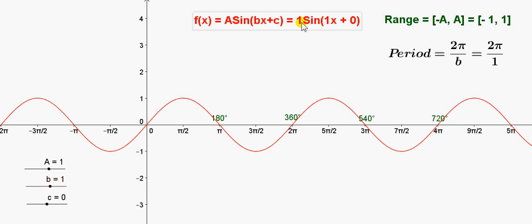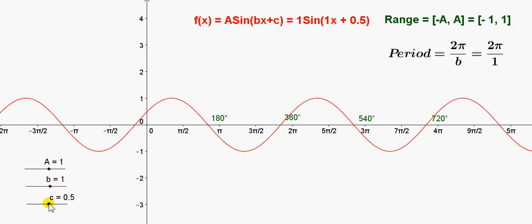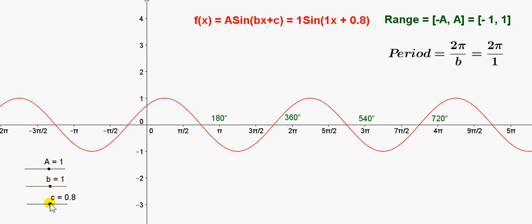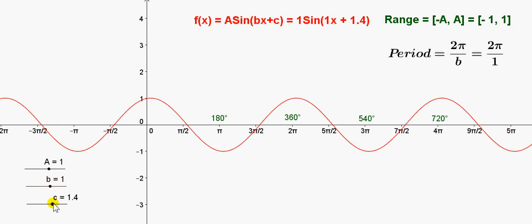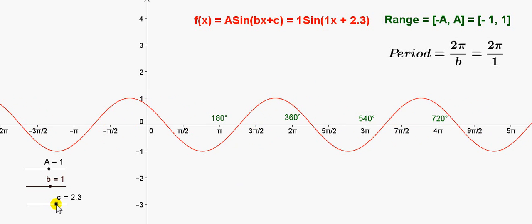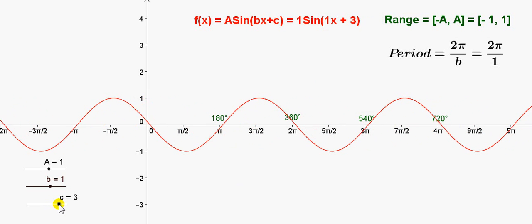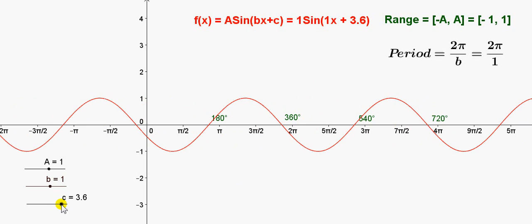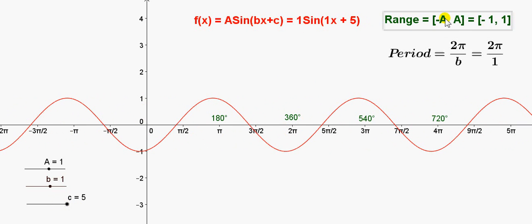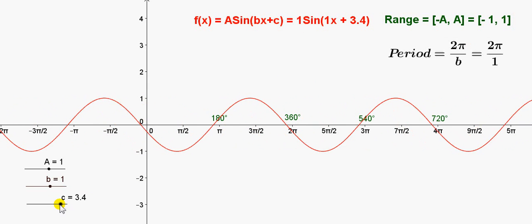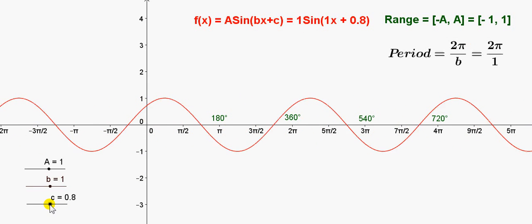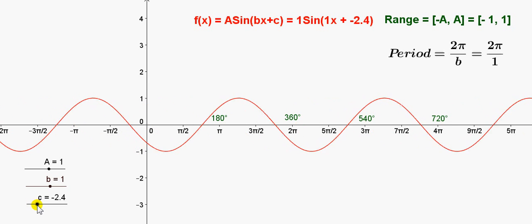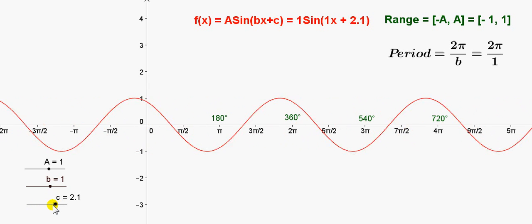So I'm going to keep a and b set to 1, but I will vary c. So I'll increase c, and as you can see here, as c increases, the function appears to be moving to the left. But the range and period haven't changed. So changing c just shifts the graph in the x direction. The shape of it stays exactly the same.